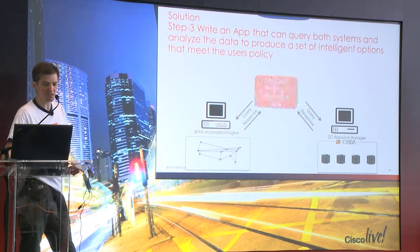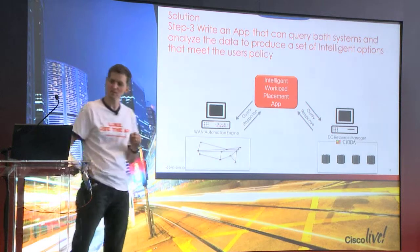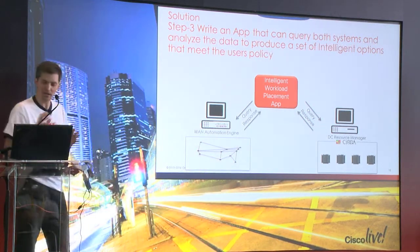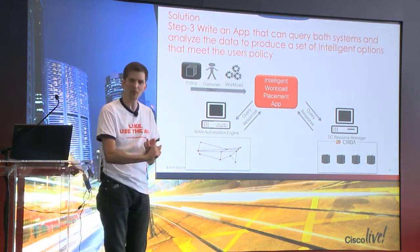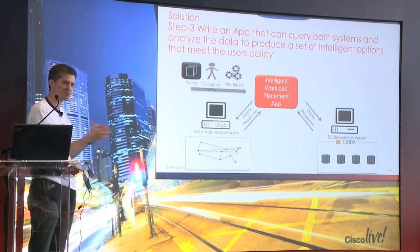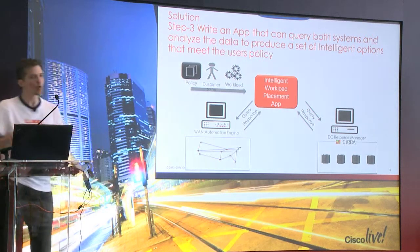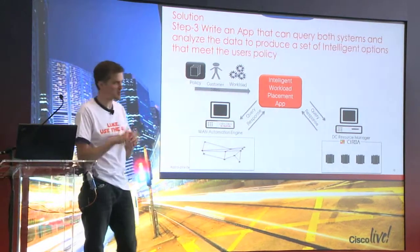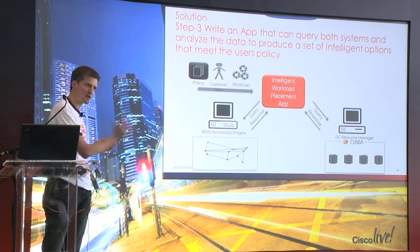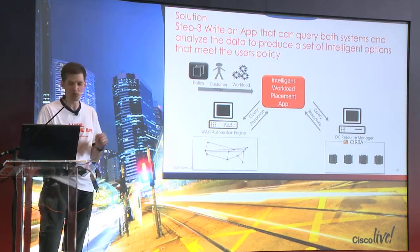For this demo, there's a piece of glue that sits between the two. That bit of glue takes in a request — consisting of the amount of network resources and data center resources you want — puts out a query to the server for data center resources and available capacity, and also puts queries out to Cisco WAE asking whether there's available capacity from a source location to each candidate data center, then combines those two sets of information to make an intelligent decision.